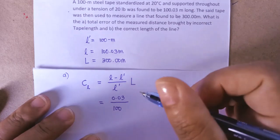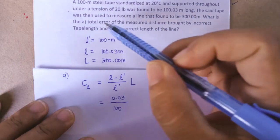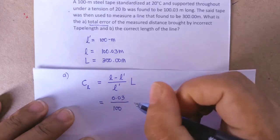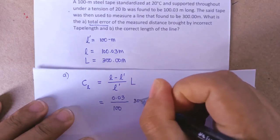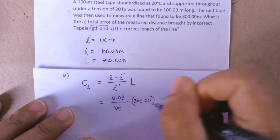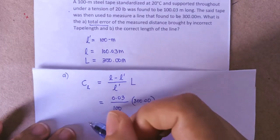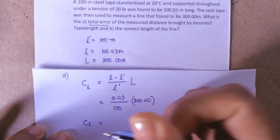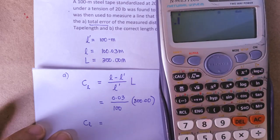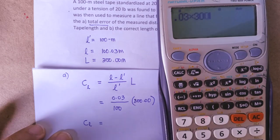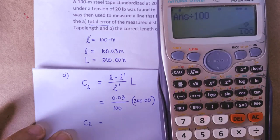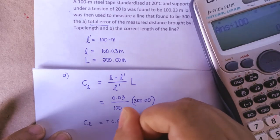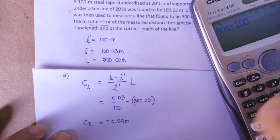Or l prime rather. We are asked to solve the total error. So we have l which is 300.00 meters. Solving that, we can have the total error: 0.03 times 300 divided by 100.